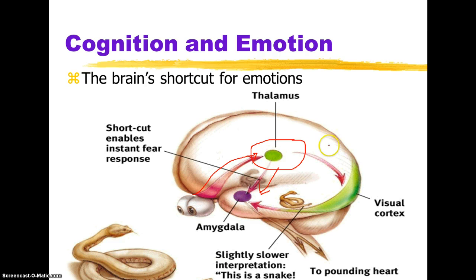We can also have a secondary system — the visual cortex — that also sends information. This is slightly slower. But this other interpretation allows cognition to come in and say, yes, it's a snake, but it's my pet snake, and therefore you don't have that same kind of arousal.